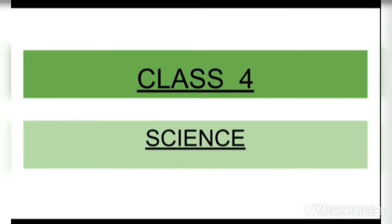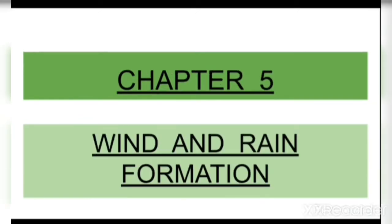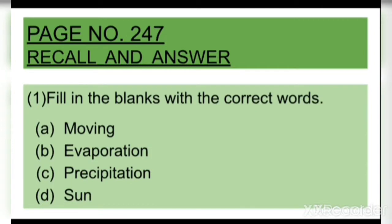Hello class, today we are going to start Science Chapter 5: Wind and Rain Formation, page number 247. Recall and Answer. Question 1: Fill in the blanks with the correct words. Option A: Moving, B: Evaporation, C: Precipitation, D: Sun.